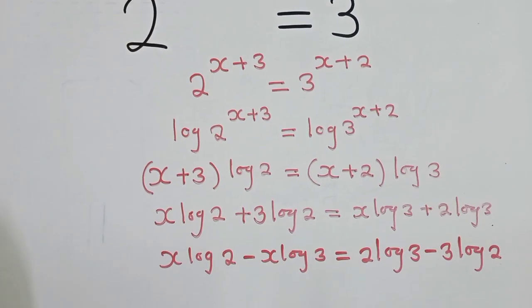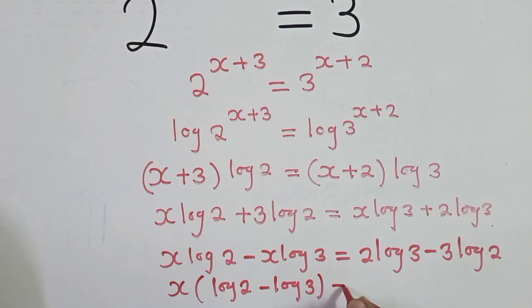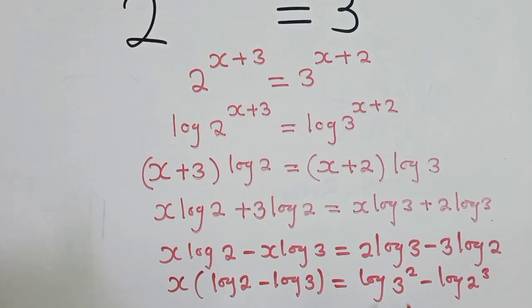So this one comes this side is equal to 2 log 3 minus 3 log 2. Next, we factor out x. We shall remain with log 2 minus log 3 is equal to log 3 power 2 minus log 2 power 3. So you see what is happening? Let me say something about this. This side, we've just factored out.